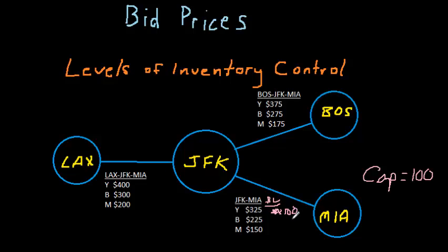We'll sell 75 to the lower fare class, which means we're protecting 25 for just the Y class, and we don't want to sell anything at the $150 fare.